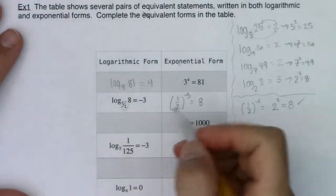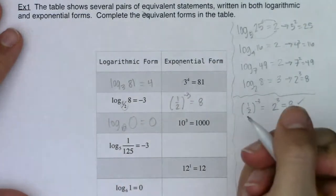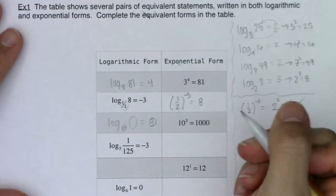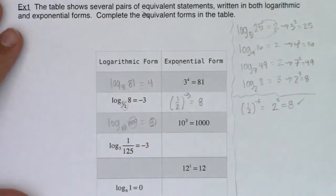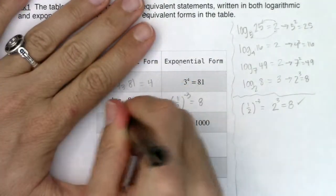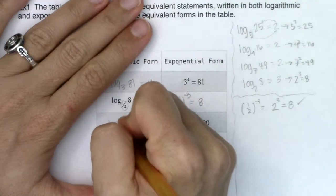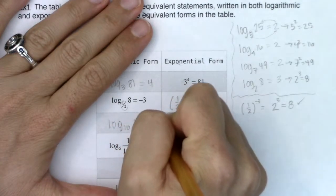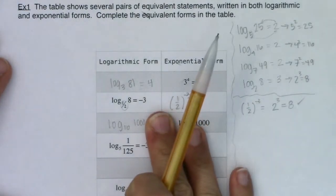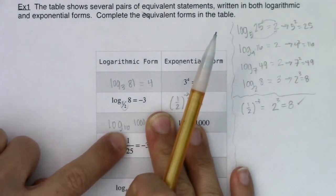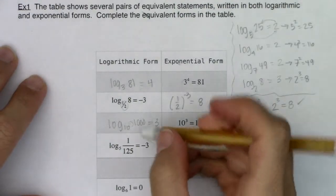Now let's go backwards — exponential form back to logarithmic form. So I have 10 cubed equals 1000. The base of my exponent becomes the base of my logarithm, the exponent is what the logarithm equals, and what the power equals becomes the argument. We get log base 10 of 1000 equals 3. Logarithms are exponents: what exponent do you need on 10 to get to 1000? 10 cubed gives you 1000, so that exponent is 3.